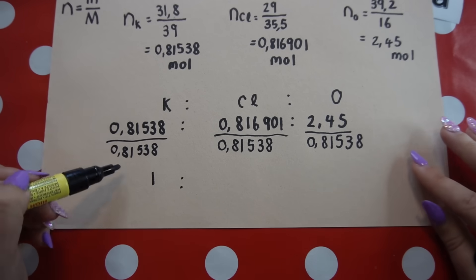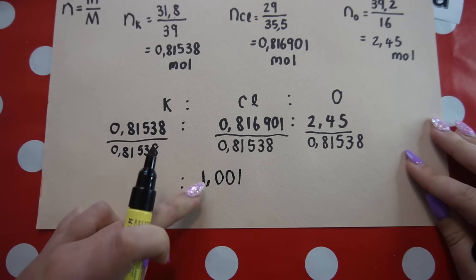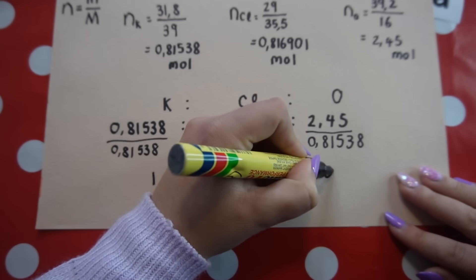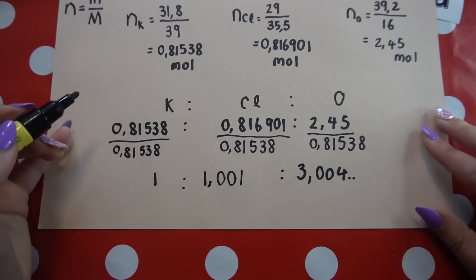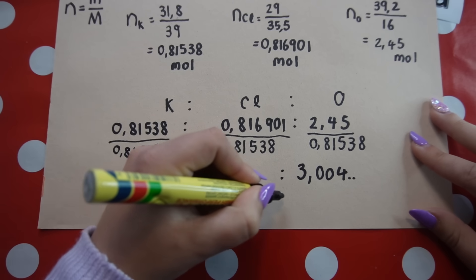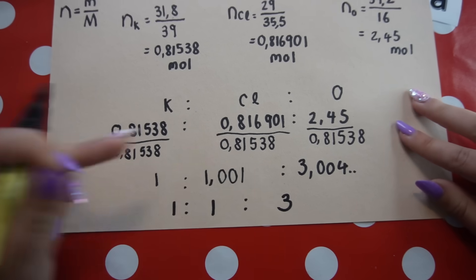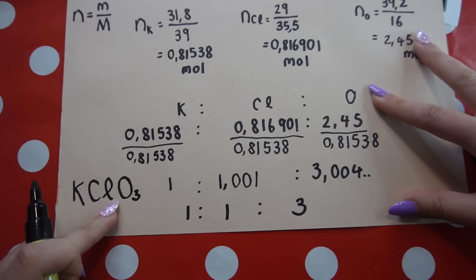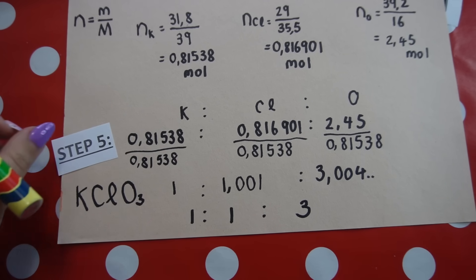Dividing each by the smallest: potassium gives 1 (dividing by itself), chlorine gives 1.001 which rounds to 1, and oxygen gives 3.004 which rounds to 3. So the ratio is 1:1:3, meaning the empirical formula is K₁Cl₁O₃. Since we don't write subscript 1, this simplifies to KClO₃.